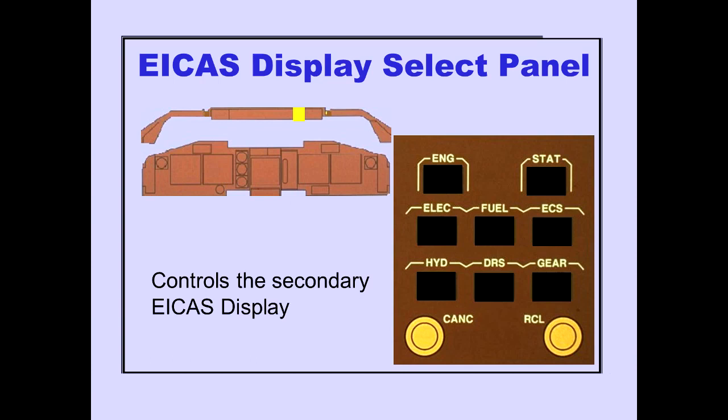Several displays can be selected for the secondary ICAST display. These displays are selected using the ICAST display select panel on the glare shield.